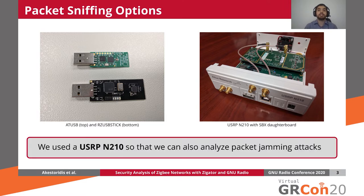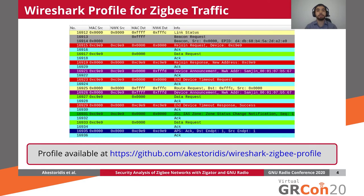For our testbed, we decided to use a software-defined radio, and in particular a USRP N210, because the ability to capture IQ signals allowed us to also analyze the effectiveness of the jamming attacks that we implemented. Once we have captured a set of Zigbee packets, we often want to inspect them using Wireshark. However, we were not aware of any widely used profile for Zigbee traffic, so we developed our own. The screenshot on this slide showcases a few of the coloring rules as well as columns that our profile displays.